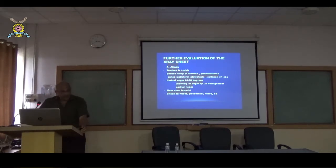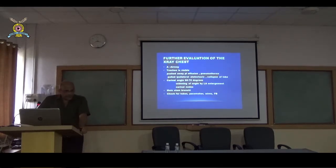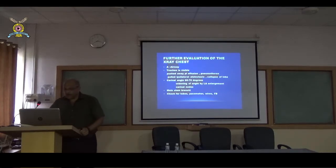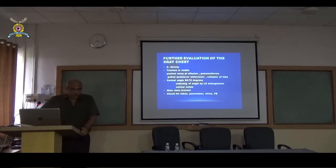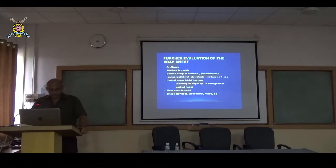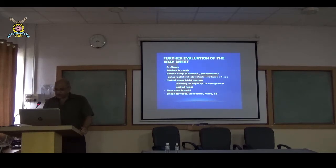We evaluate using an alphabetical approach. A stands for the airway. Is the trachea visible? The trachea is pushed away by a pleural effusion or a pneumothorax. It is pulled towards the same side when there is collapse or atelectasis of a lobe. Next we see the carinal angle where the trachea bifurcates — it should normally be 60 to 70 degrees. The carina is widened by left atrial enlargement or by sub-carinal lymph nodes. We also check for any tubes, pacemaker wires, or foreign bodies.